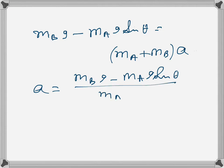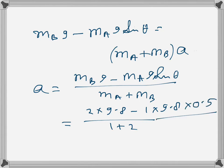So if we do that, we get 1 plus 2, this is 2 times 9.8 minus 1 times 9.8 times sine 30 degrees. I'm just writing it directly, so that is 0.5, sine 30 degrees.